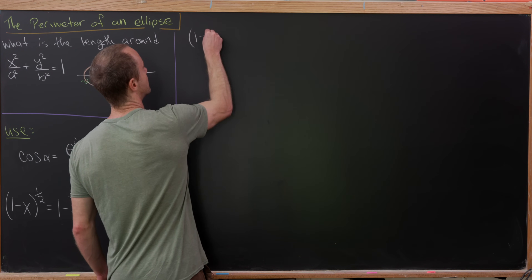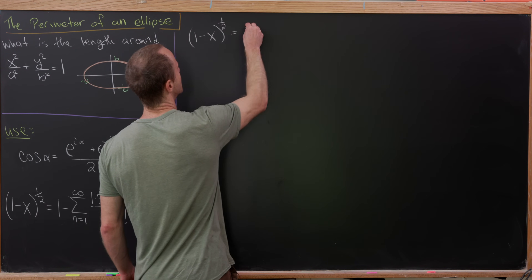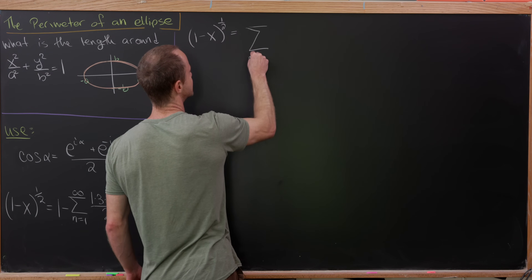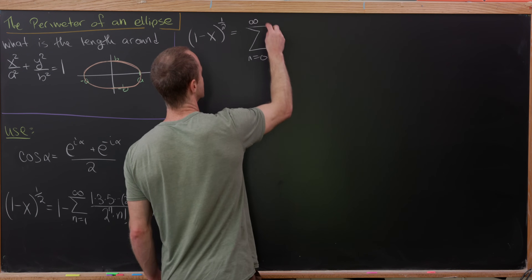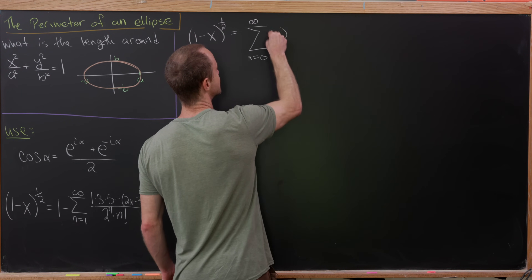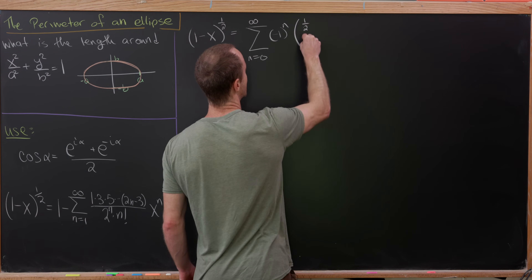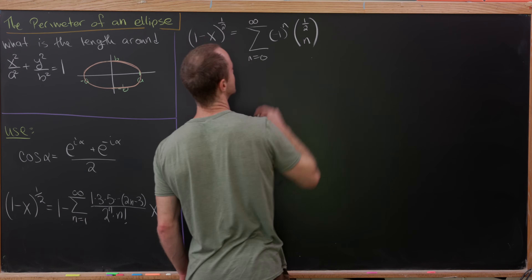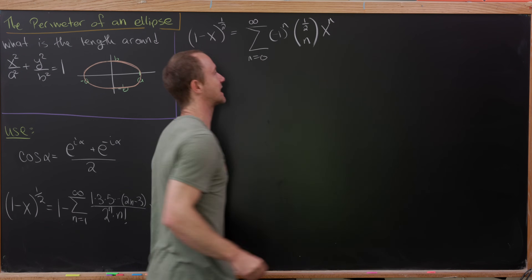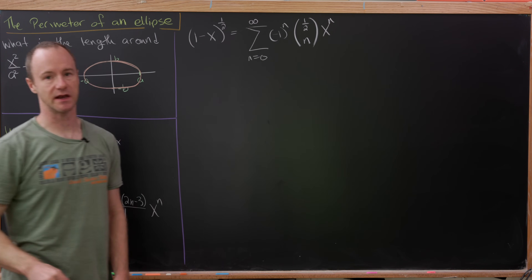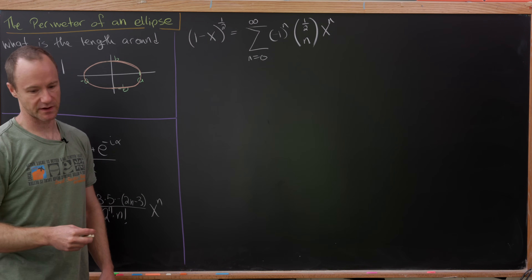We've got (1 − x) to the half, but notice that that is simply the sum as n goes from 0 to infinity of (−1) to the n times the binomial coefficient (1/2 choose n) times x to the n. So that's by the binomial expansion formula.